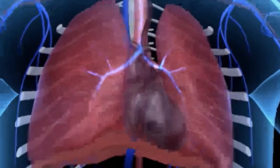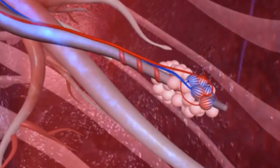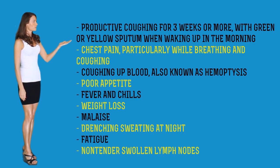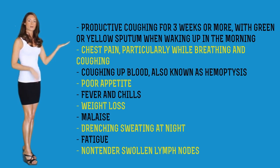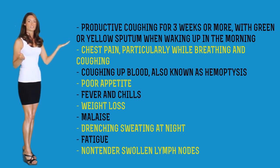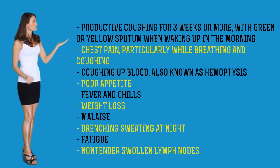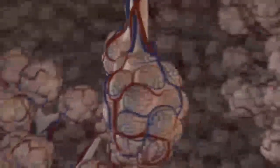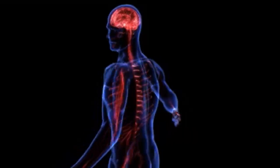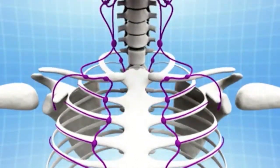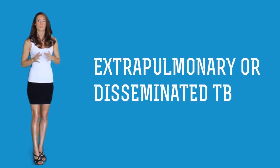Active TB shows the following symptoms: productive cough for three weeks or more with green or yellow sputum; chest pain particularly while breathing and coughing; coughing up blood, also known as hemoptysis; poor appetite; fever; chills; weight loss; malaise; drenching night sweats; fatigue; and non-tender swollen lymph nodes. Active TB starts in the lungs and if not controlled it can spread to other parts of the body such as the bones, kidneys, spinal cord, brain, and lymph nodes. However, that is very rare, and the condition is known as extra-pulmonary or disseminated tuberculosis. Symptoms can vary according to the organ being affected.